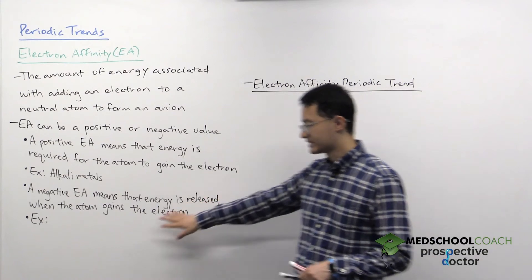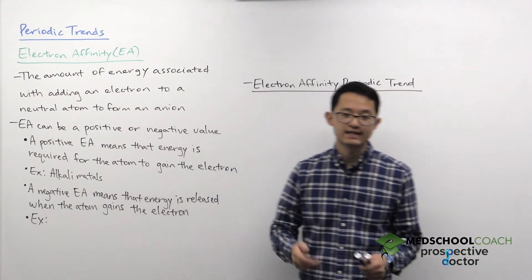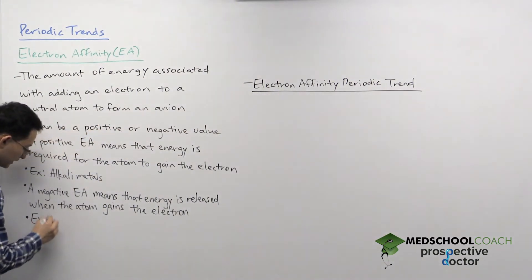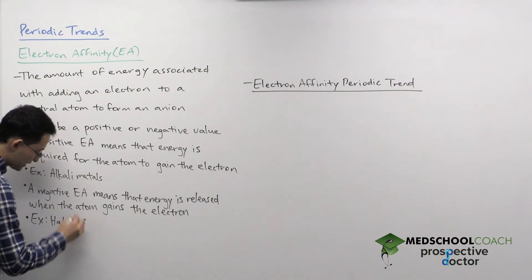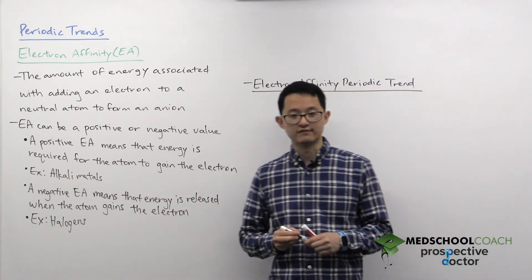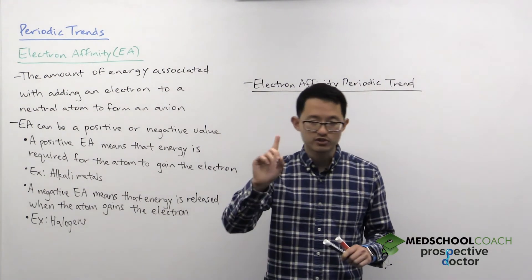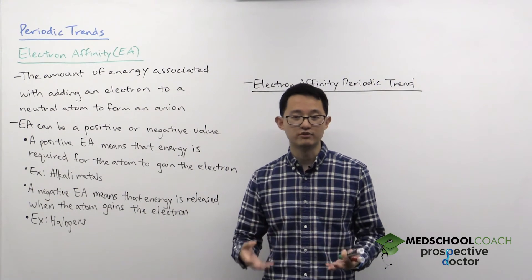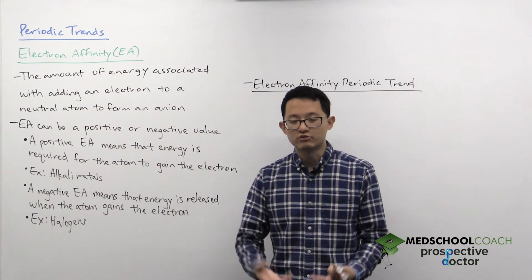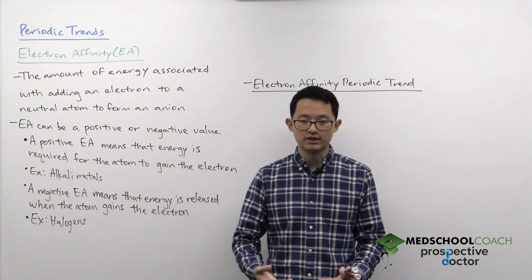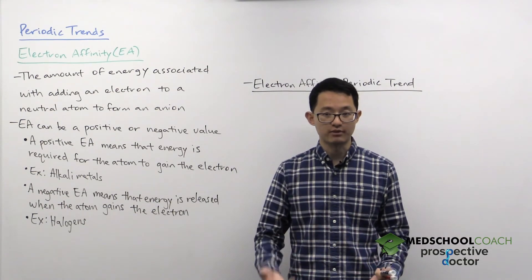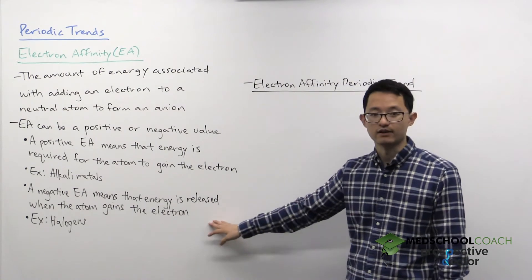A negative electron affinity means that energy is released when the atom gains that electron. A good example of atoms with a negative electron affinity are the halogens — fluorine, chlorine, bromine, and iodine. They're very close to noble gas configuration, and if we give them just one more electron, they'll have noble gas configuration. When they gain that electron, they're now at a more stable state, which means they're at a lower energy. In order to be at a lower energy state, they must have released energy in that process — that's why they have a negative electron affinity.